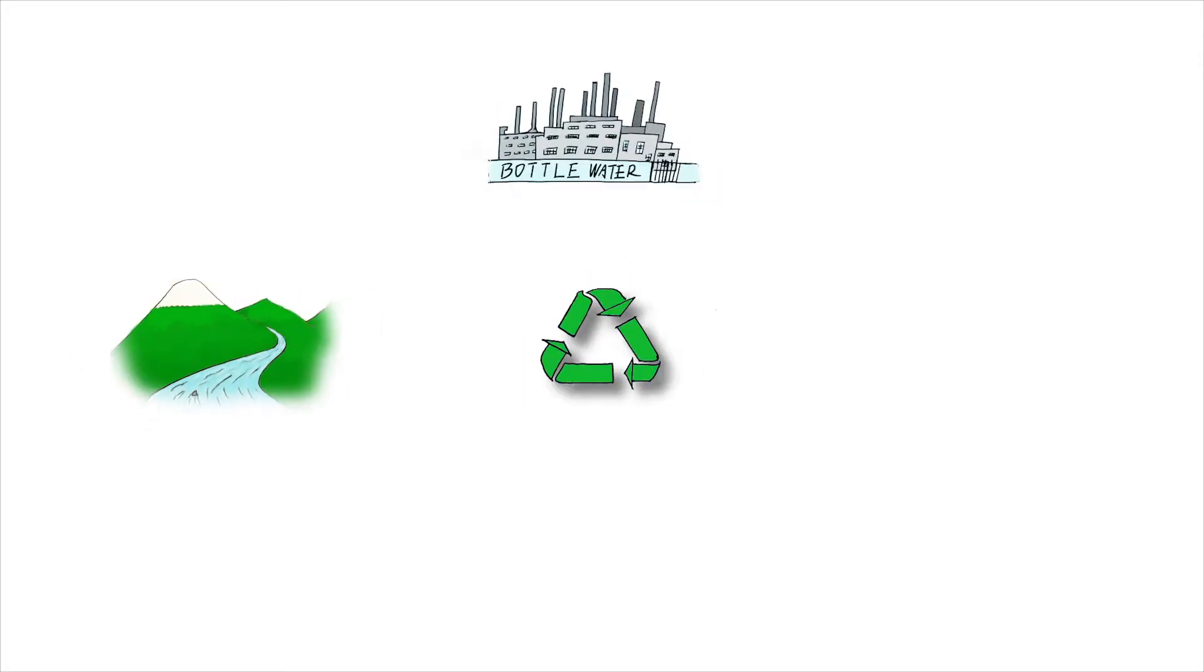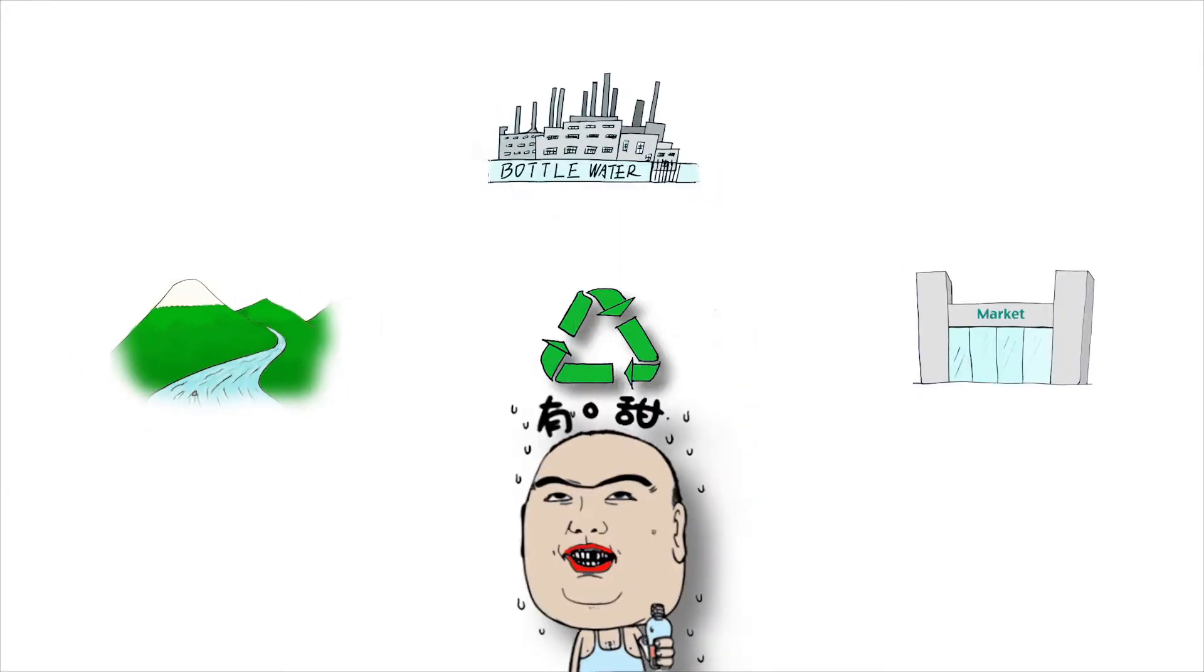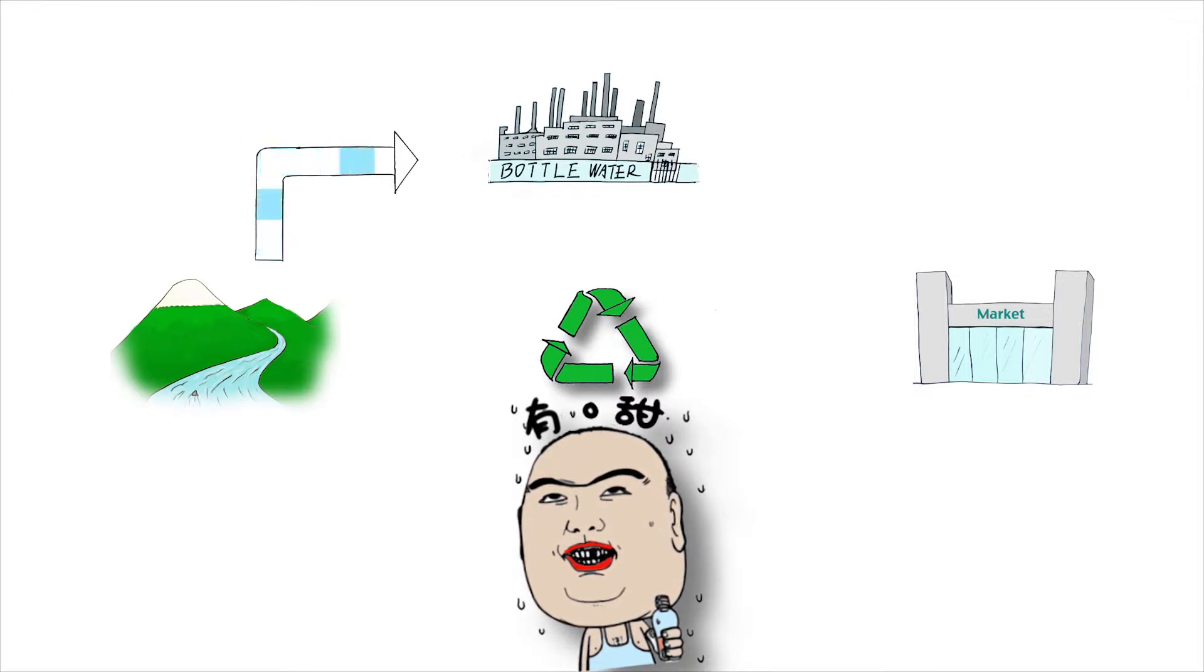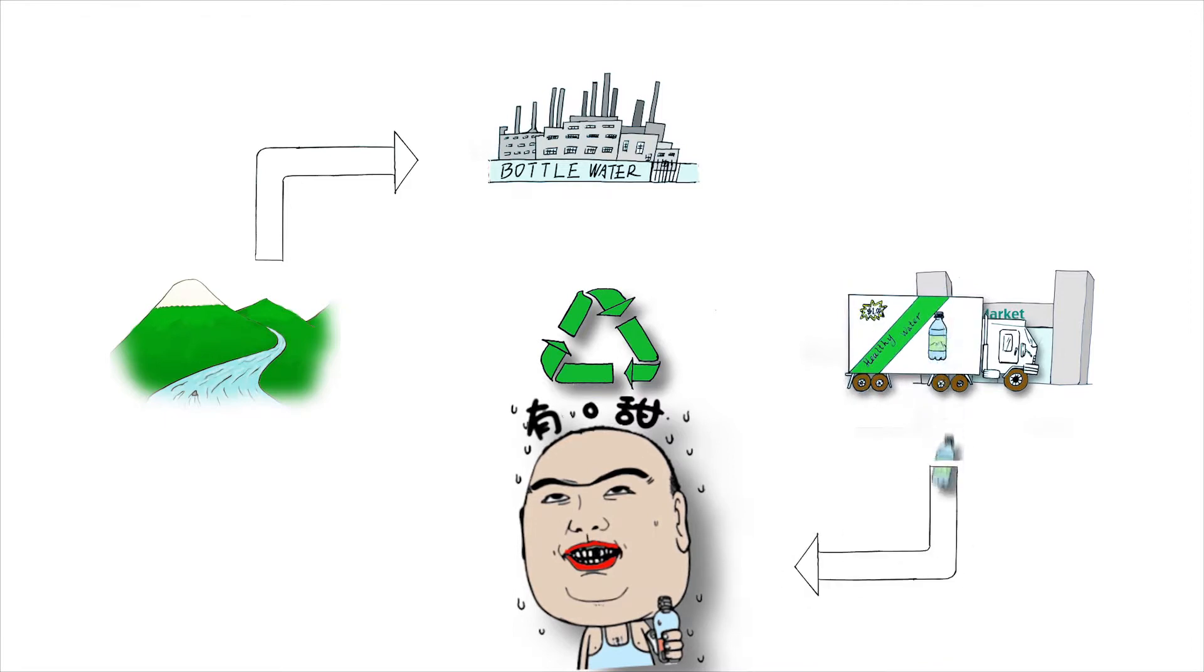Bottled water is a cycle. The companies get water from the rivers. They process the water and put them into plastic bottles, then sell them in a shop. All the excretion is disposed back into the river.